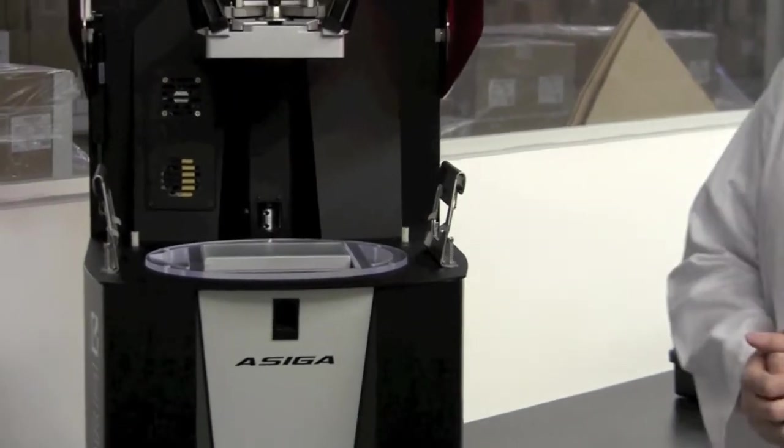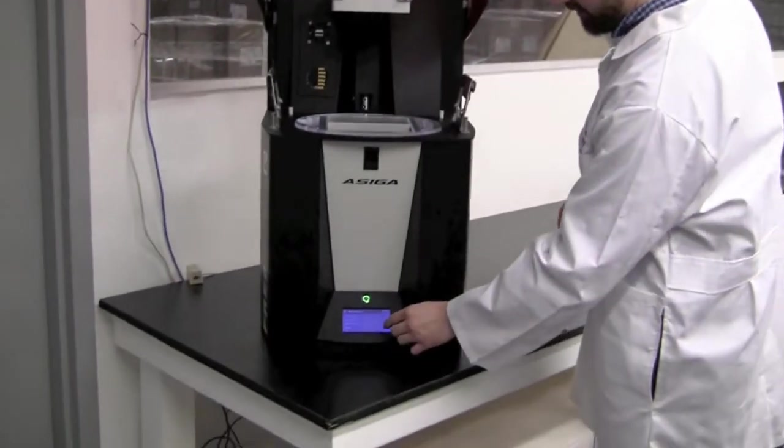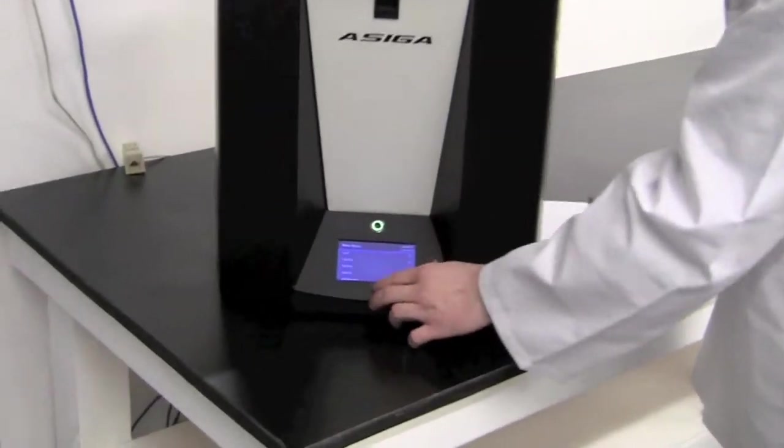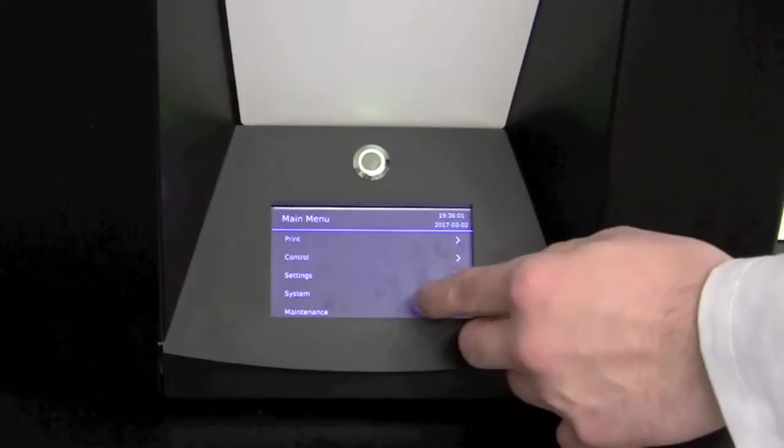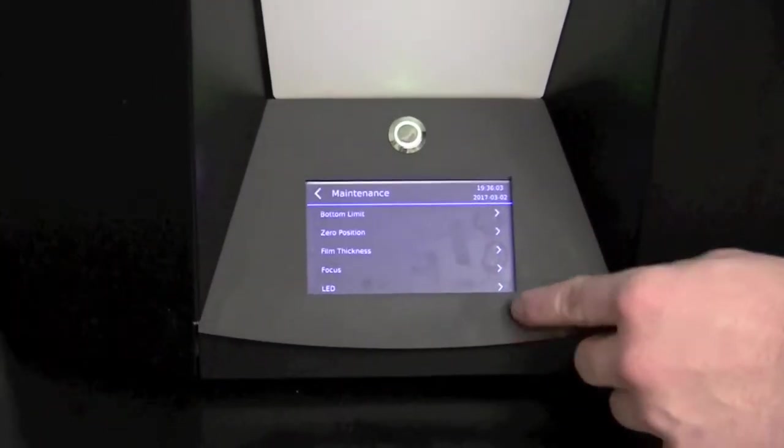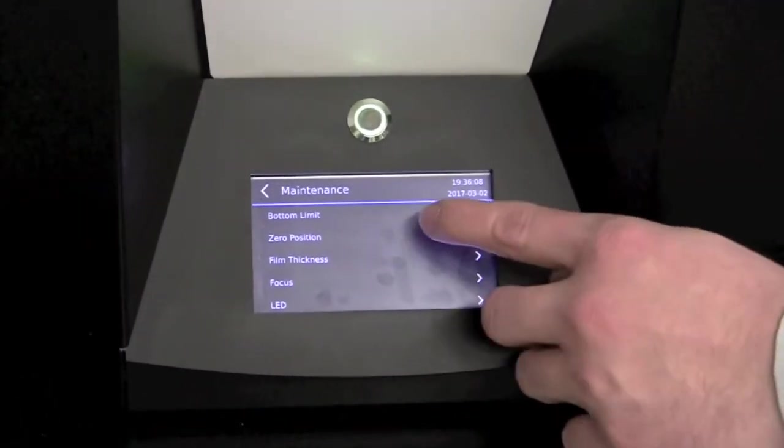The first step of performing the Z-axis calibration is to go to the main screen and select the maintenance tab. Under the maintenance tab, we'll see a zero position. This is what we'll want to select.